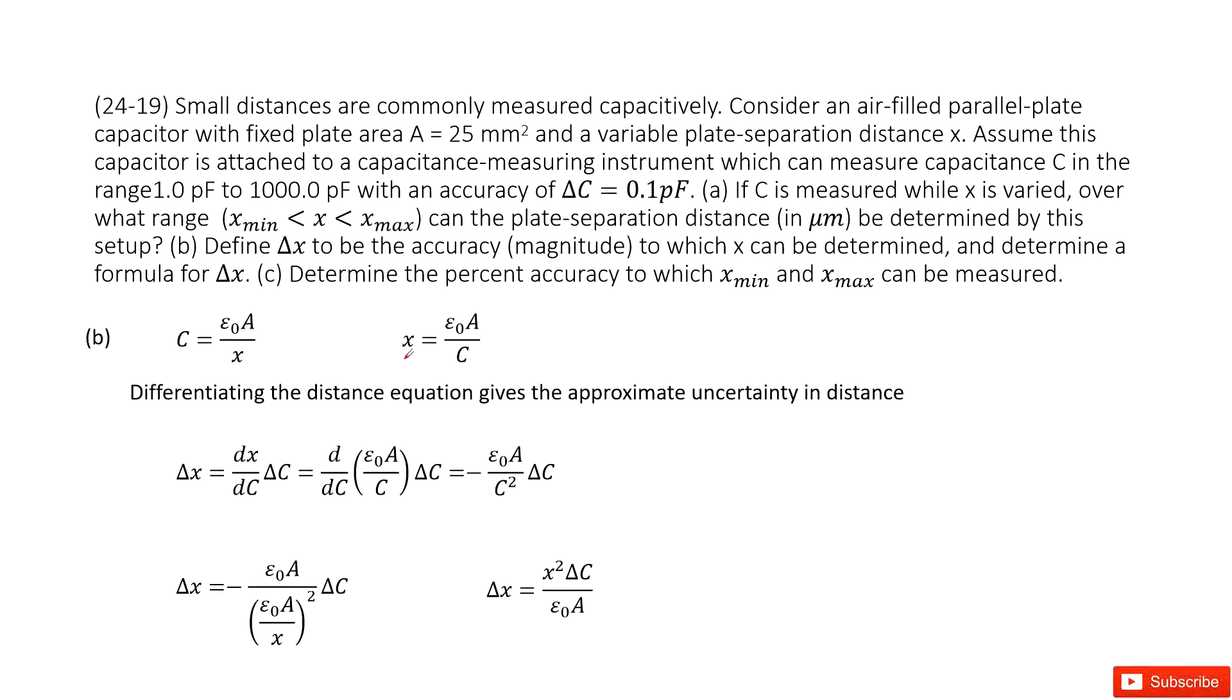We know that x, this is the gap between the two planes, equals epsilon naught times A over C. Now we need to find delta x, so we can use this function. Do the differential with x to C. So differential dx dc, and then times delta C is delta x, because this one and this one can cancel.